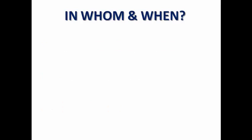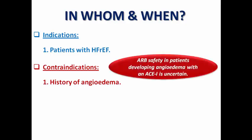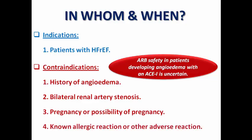In whom and when do we prescribe it? The indication is patients with heart failure with reduced ejection fraction. Contraindications include history of angioedema, because ACE inhibitors increase the level of bradykinin which may result in angioedema in predisposed patients — and we note that the safety of angiotensin receptor blockers in those patients is still uncertain. Also contraindicated are patients with documented bilateral renal artery stenosis, pregnancy or possibility of pregnancy.